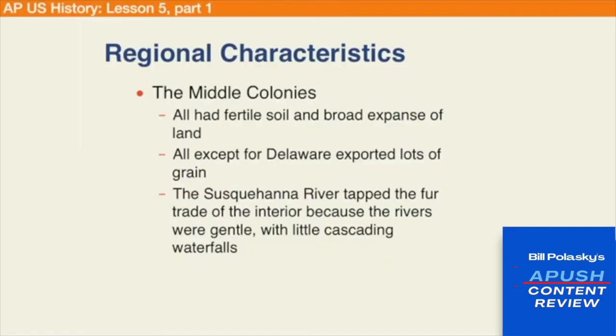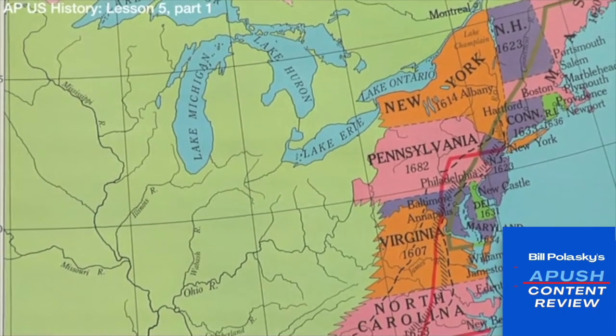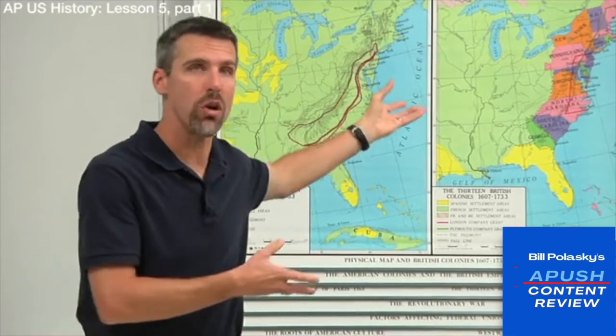Moving to the middle colonies — largely New York, Pennsylvania, and New Jersey — they had the best of both worlds, being economically diverse. They had quite fertile soil and a nice long growing season, becoming the colonial breadbaskets. They exported lots of grain, and the Hudson River Valley and Pennsylvania served as granaries for all the colonies. The fur trade of the interior was accessed through rivers running through Pennsylvania and New York heading inland, generating significant income as part of England's mercantilist model.